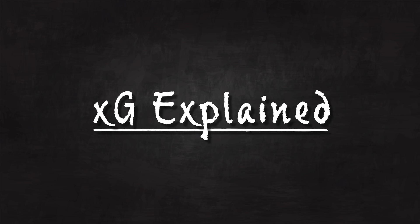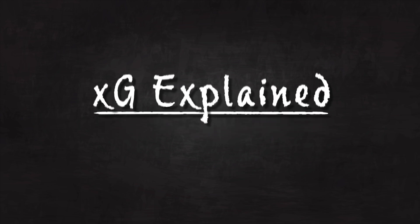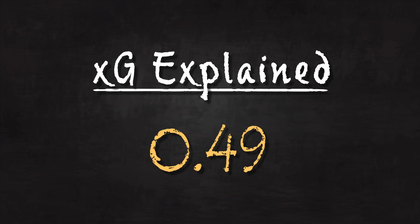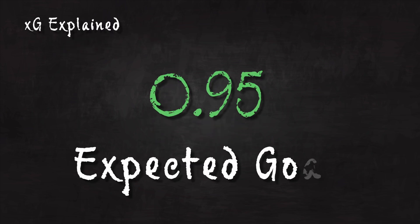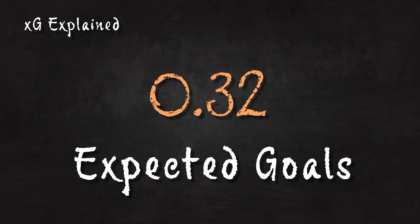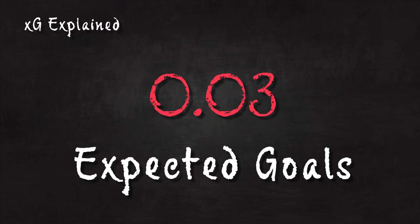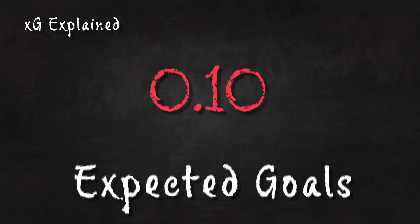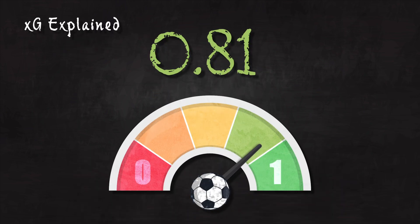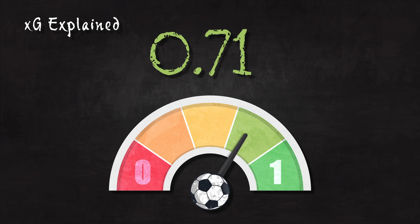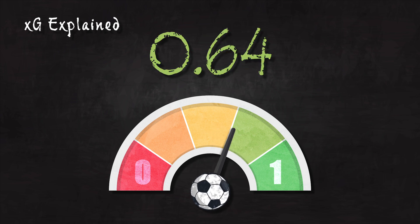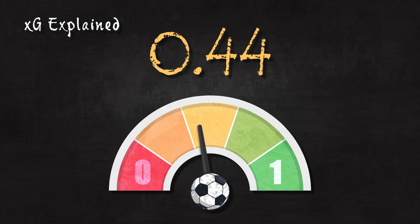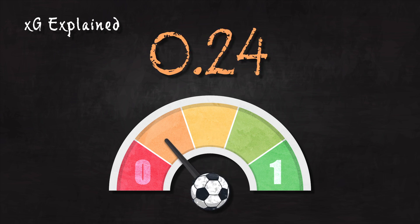Short for expected goals, XG expresses the probability that a player will score a goal in a given situation — hence the name. So what does XG tell us? XG measures the quality of a shot. Essentially, it tells us how likely it is that the shot will result in a goal.